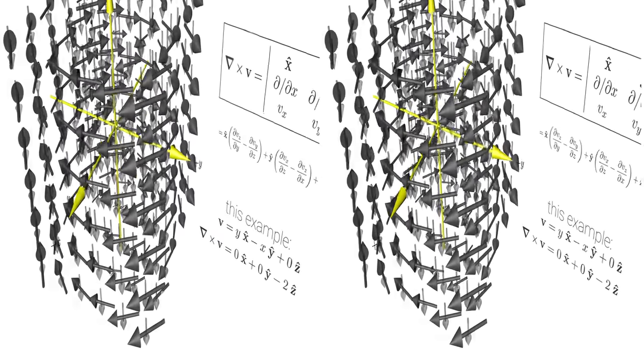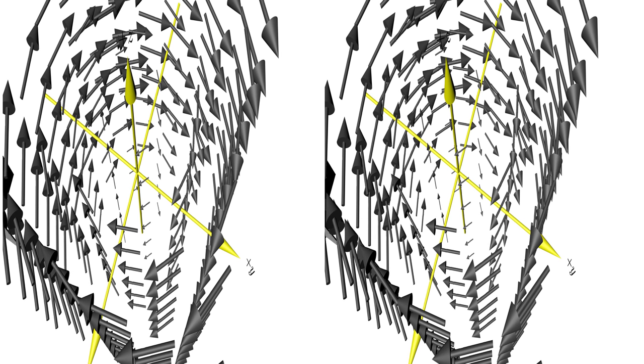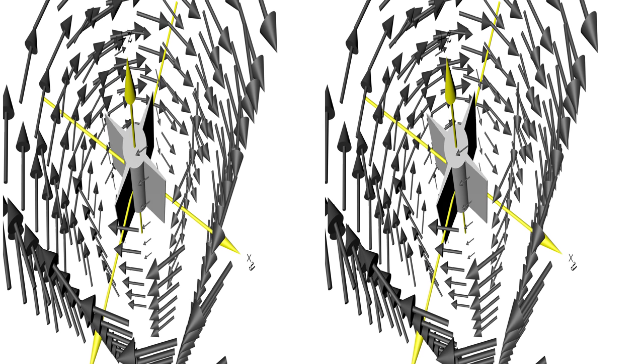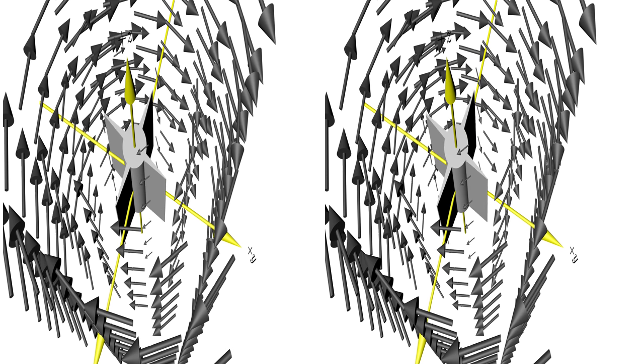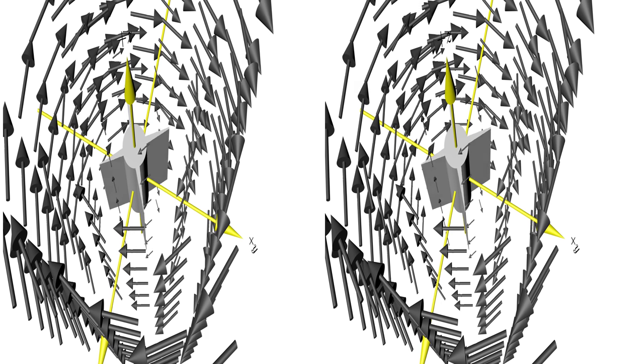As a simple example, let's look at this field. If you would place some sort of curl measurement device in the center, it would start rotating. Its axis of rotation is in this case along the z-direction, just as you would expect from the definition of the curl.